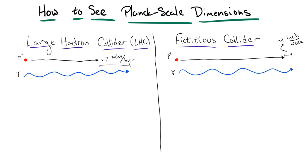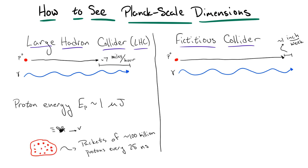The difference between 7 miles per hour and 1 inch per week may not seem huge, but when things get this close to the speed of light, their energies become massive. The LHC produces protons each with about 1 microjoule of energy. This is comparable to the kinetic energy of a flying mosquito. This seems small, but keep in mind that this is the energy of a single tiny proton. The LHC produces packets of protons about every 25 nanoseconds, with each packet consisting of about 100 billion protons. That's a lot of energy.